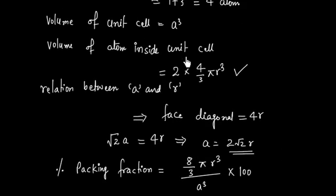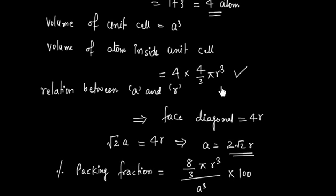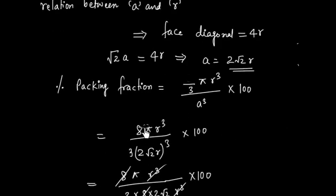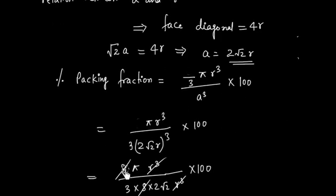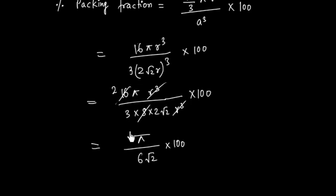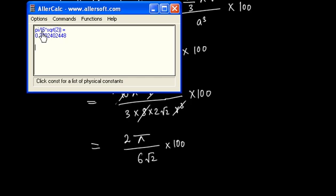We had made one mistake earlier — the effective number of atoms is 4, not 2. So the volume of atoms is 4 × (4/3)πr³ = (16/3)πr³. Correcting this, we get 16 in the numerator, and 16/8 = 2, so the expression becomes 2π divided by 6√2. Calculating this value gives 0.74.